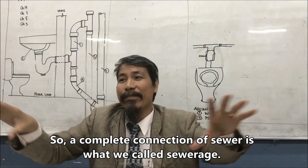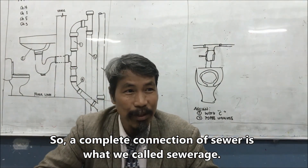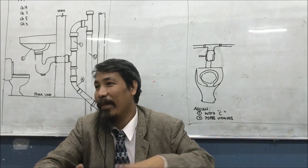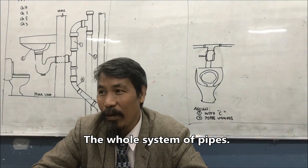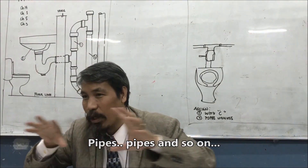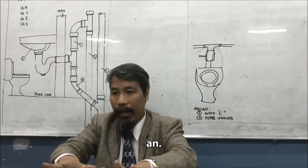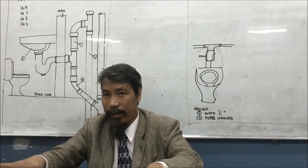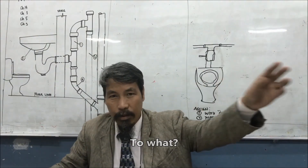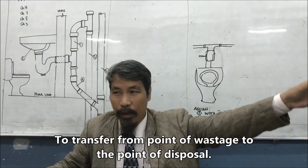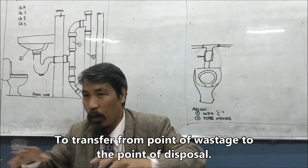So a complete connection of sewer is what we call sewerage — the whole system of pipes, valves, and so on that is put in place to transfer from the point of wastage to the point of disposal.